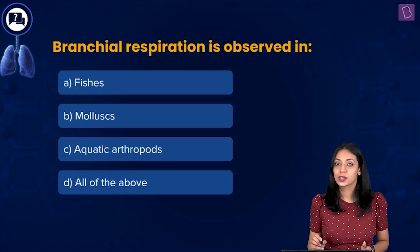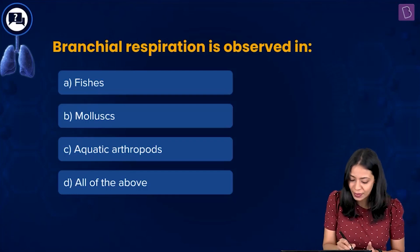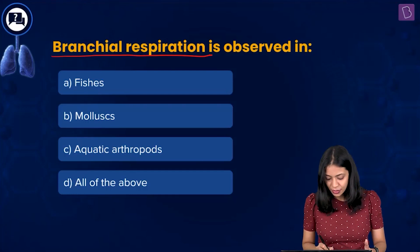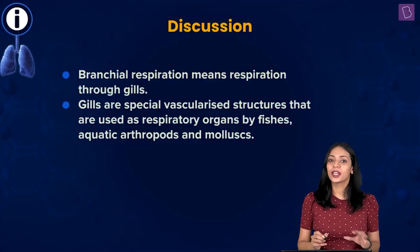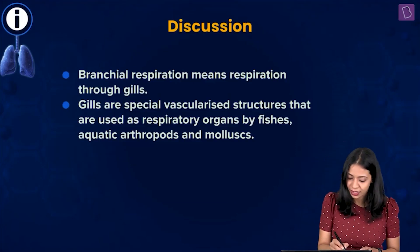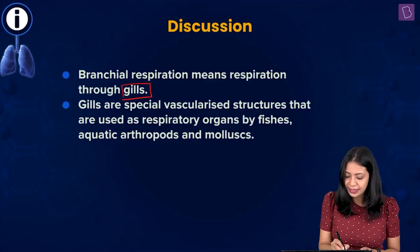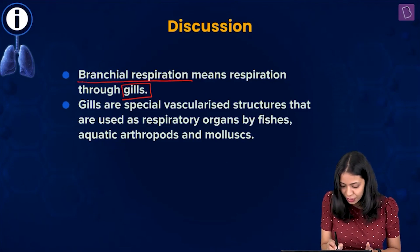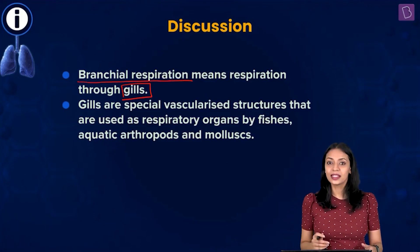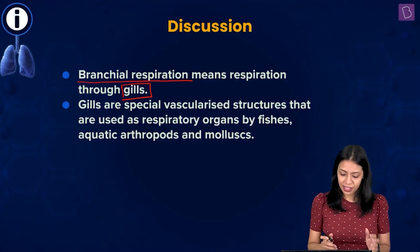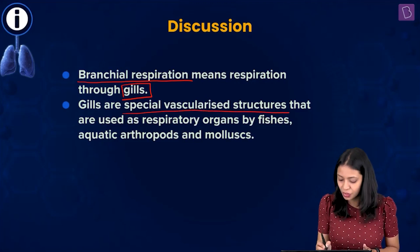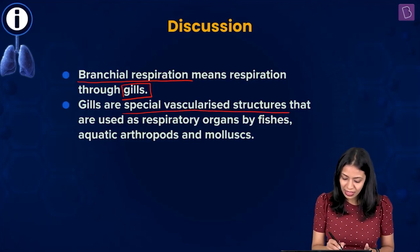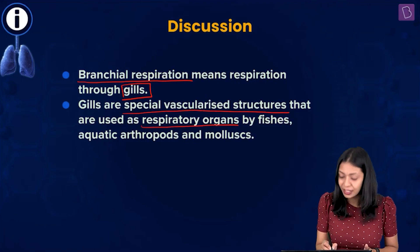In order to answer this question, we must first know what branchial respiration refers to. If respiration takes place through the gills, then it is referred to as branchial respiration. Gills are special vascularized structures — meaning they have blood supply — that are used as respiratory organs.